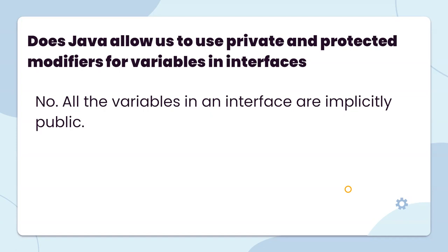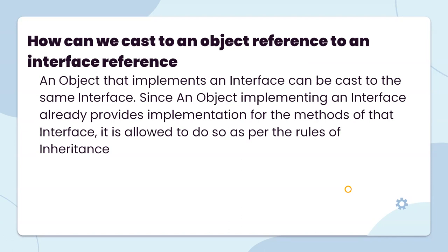Does Java allow us to use private and protected modifiers for variables in an interface? No. All variables in an interface are implicitly public. How can we cast an object reference to an interface reference? An object that implements an interface can be cast to that same interface. Since the object already provides implementation for the methods of that interface, this casting is allowed.